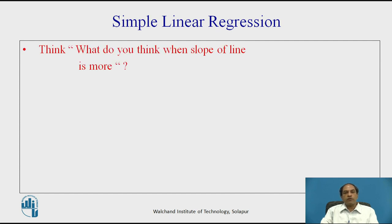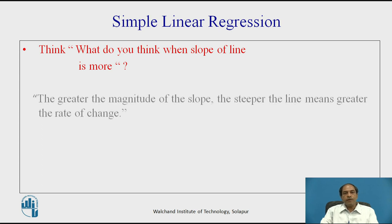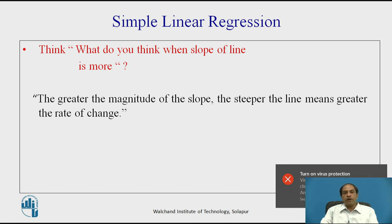Consider y = mx + c — what happens when the slope is more or less? The interpretation is: the greater the magnitude of the slope, the steeper the line. The slope is correlated with the rate of change — the greater the rate of change, the steeper the slope of the line.